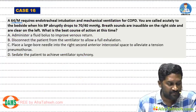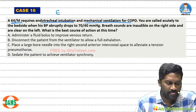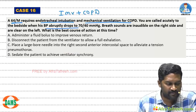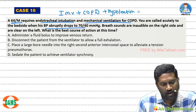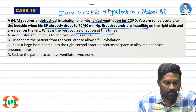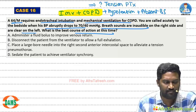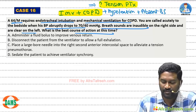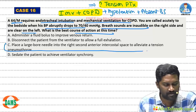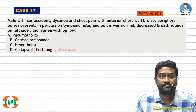Case 16: A 64-year-old male requires endotracheal intubation and mechanical ventilation for COPD. This is a dangerous combination — invasive mechanical ventilation in COPD. He develops hypotension and absent breath sounds on the right side, clear on the left. Diagnosis is tension pneumothorax. In tension pneumothorax, don't think about any other option — the single priority is saving the patient's life. Place a wide-bore needle in the right anterior second intercostal space to alleviate the tension pneumothorax.